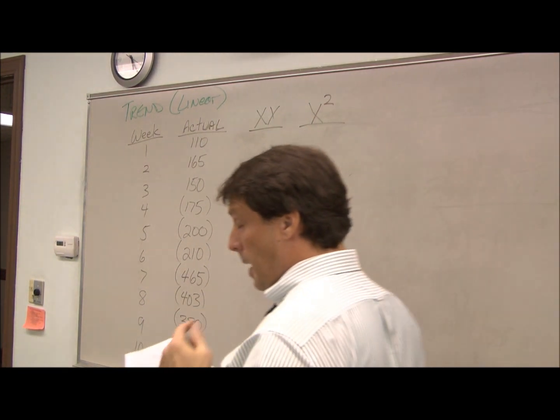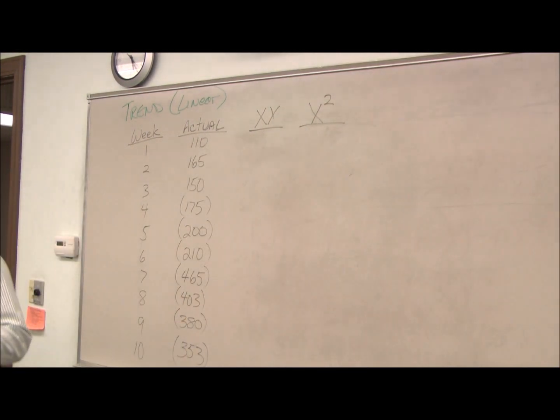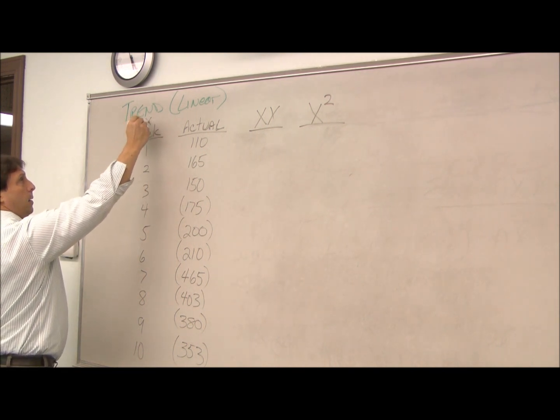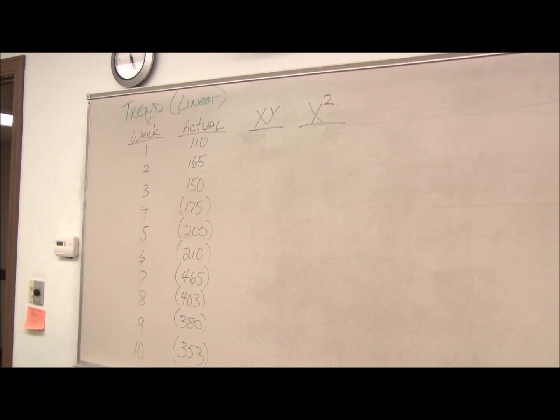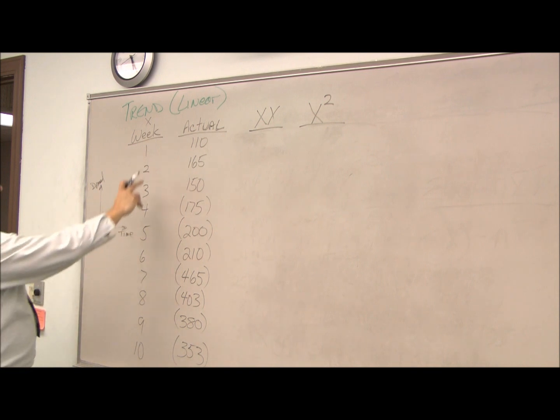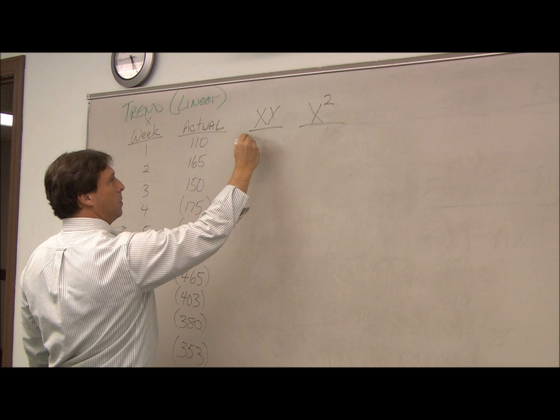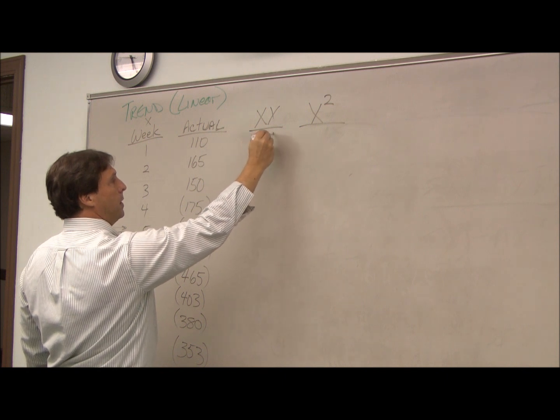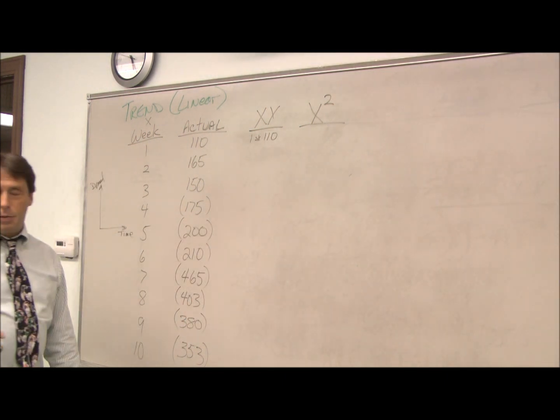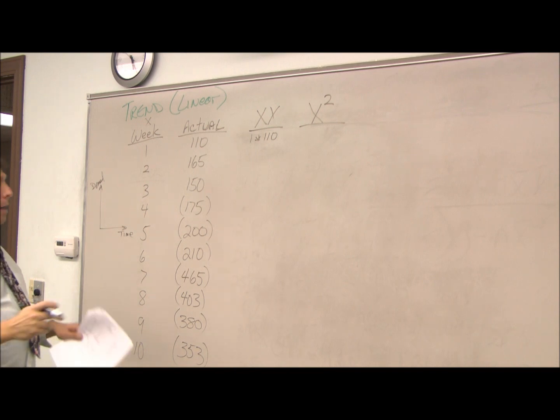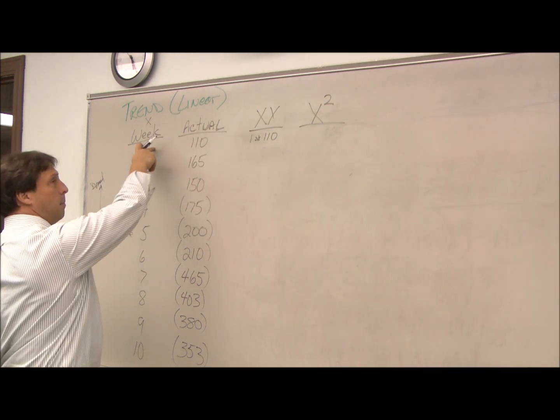Okay, the next thing we do when we're doing the trend forecast is calculate our x times our y. We're using x as our time on the x-axis. And our y-axis is our actual demand. So my x times my y would just be my 1 times my 110, which is 110. And x-squared is 1 squared, which equals 1.